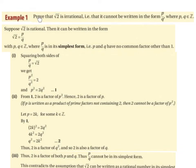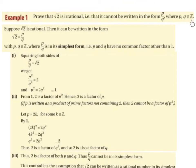Example. Prove that the square root of 2, that root 2, is irrational, i.e., that it cannot be written in the form of p over q, where p and q are elements of the integer set, so integers being positive or negative whole numbers. A fraction is a rational number, so we want to prove that root 2 cannot be written as a fraction.